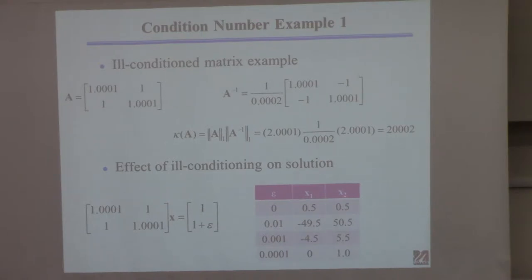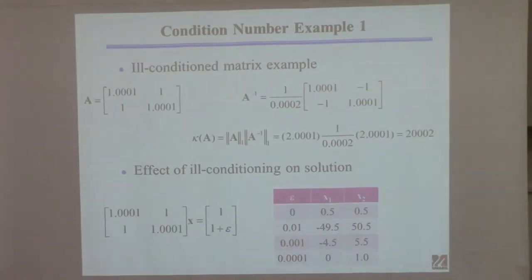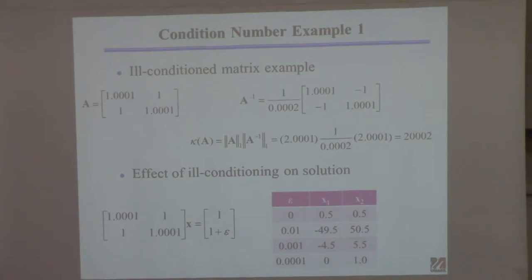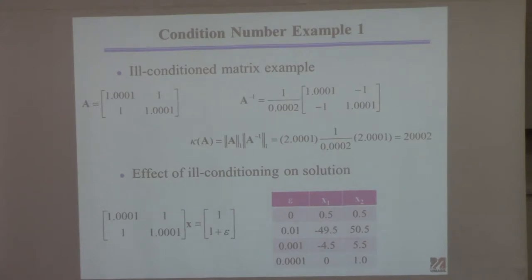Once you know a matrix has a bad condition number, you should think about whether you even want to solve the system of equations — you might just say it's hopeless. Unless the B matrix is perfect, you're going to get an erroneous answer. I took this into MATLAB: with the right-hand side b having 1 plus epsilon for the second element, if epsilon is 0 the solution is [1/2, 1/2]. With a 1% error, the solution is wildly wrong. Even 0.1% or 0.01% error gives a totally wrong answer. Unless you can guarantee essentially no measurement error, you can't have any confidence in the solution.